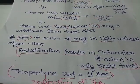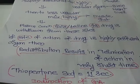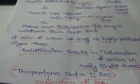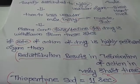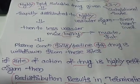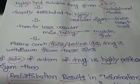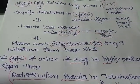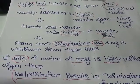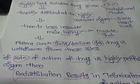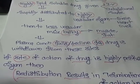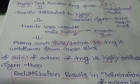When thiopentone sodium, which is a highly lipid soluble drug, is given intravenously, it will get rapidly distributed to the highly vascular organs like brain, heart, liver, and kidney. And then it distributes to the less vascular organs like muscle and adipose tissue.